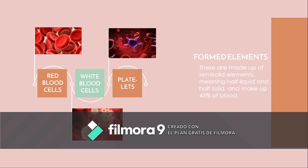Formed elements are made up of semi-solid elements and make up 45% of blood. There are three types: red blood cells, also called erythrocytes, are the most abundant formed elements in the blood, representing 99%. White blood cells, also called leukocytes, are divided into two groups: agranulocytes and granulocytes.